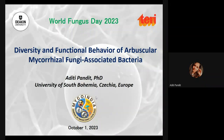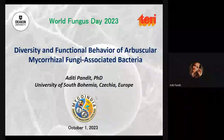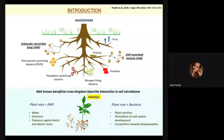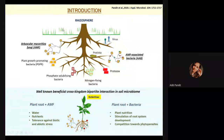The title of the presentation is 'Diversity and Functional Behaviour of Arbuscular Mycorrhizal Fungi and their Associated Bacteria.' I will give a very brief background. We have above-ground and below-ground scenarios, and here we are focusing on the below-ground scenario — the rhizosphere — where plant roots are associated with many different microorganisms. These microorganisms can be beneficial, neutral, or harmful to each other or to plant development, and they include arbuscular mycorrhizal fungi, different bacteria known as PGPRs, phosphate or nitrogen solubilizing bacteria, algae, viruses, and protozoans.